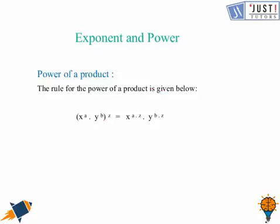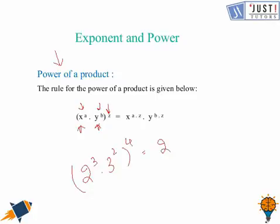Now we move ahead and we are going to learn about power of a product — different bases, different powers, whole raised to another power. So if it is 2 raised to the power 3 times 3 raised to the power 2, whole raised to the power 4, this equals 2 raised to the power 3 times 4, which is 12, and 3 raised to the power 2 times 4, which is 8. In generalized form: x to the power a times y to the power b, whole raised to the power z, equals x to the power az times y to the power bz.